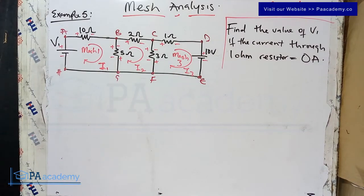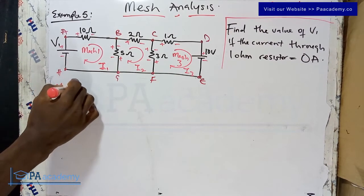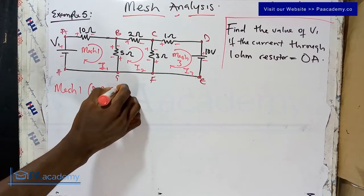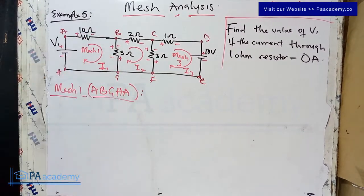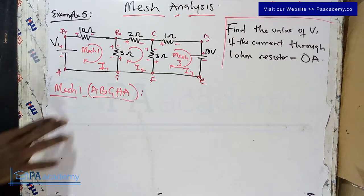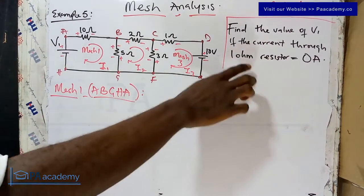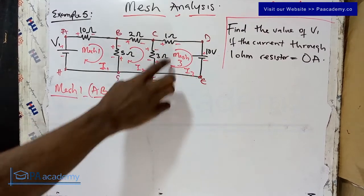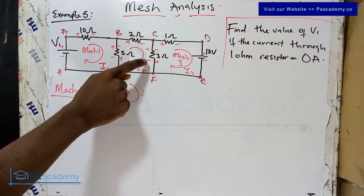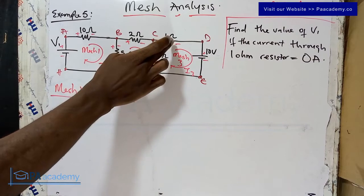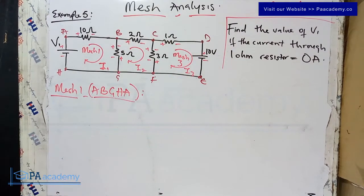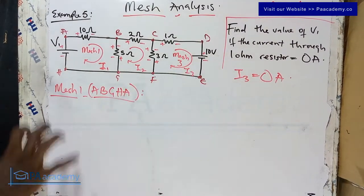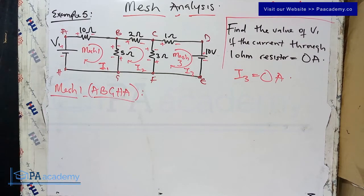Now we apply Kirchhoff's Voltage Law to each mesh. Before we do, note that the one-ohm resistor only has current I3 flowing through it, and we're told that current equals zero. Therefore I3 = 0 amperes. Wherever we encounter I3 in our equations, we replace it with zero.